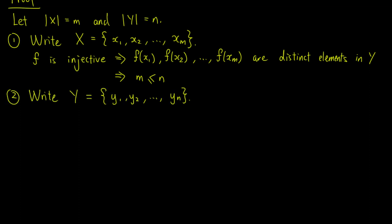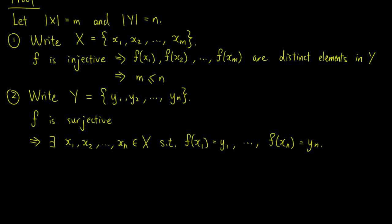For the second point, we write the elements of Y as y1, y2, up to yn. f being surjective implies that there exist elements x1, x2, up to xn in X such that f of x1 equals y1, f of x2 equals y2, and so on until f of xn equals yn. This implies that the set X contains the elements x1, x2, up to xn, so the size of X, which is m, is greater than or equal to n.